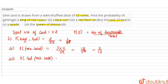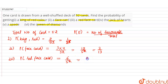There are total 12 face cards, and out of 12 face cards, 6 face cards are of red color. So probability will be equal to 6 divided by 52, which equals 3 divided by 26.